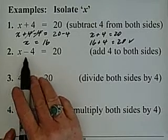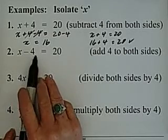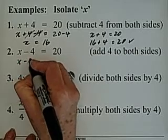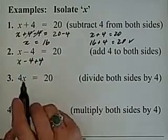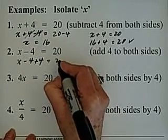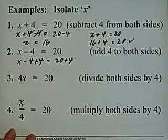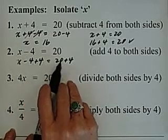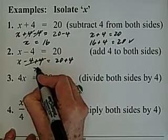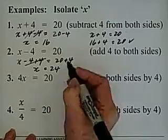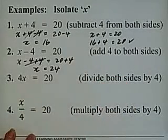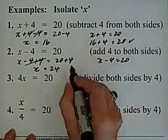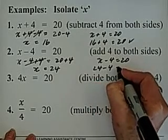Now we have x minus 4 equals 20. We have a negative 4, so we add 4 to get rid of it. So x minus 4 plus 4 — if we add 4 to the left side, we must add 4 to the right side: 20 plus 4. These cancel because minus 4 plus 4 is 0, and we rewrite x equals 20 plus 4, which is 24. Plugging back in: 24 minus 4 equals 20, which is correct.